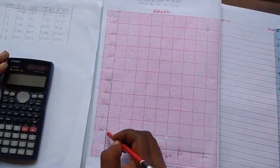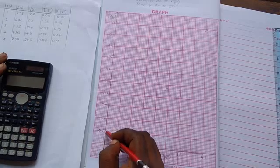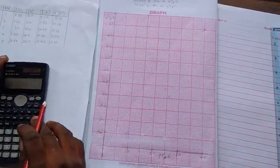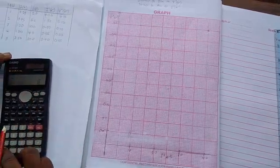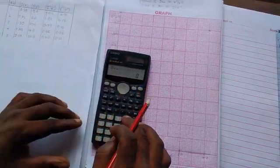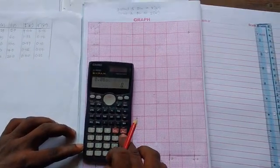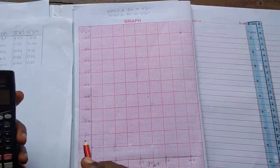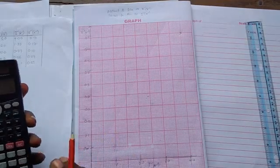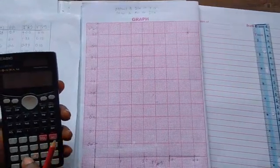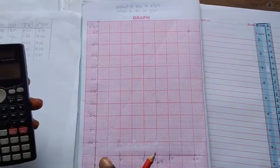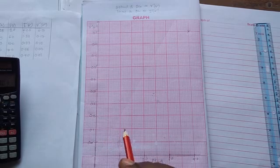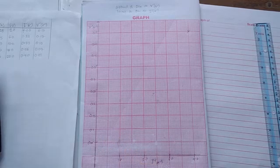This vertical, we said 2 centimeters to represent 0.05. That means there are 10 boxes, 10 boxes to 0.05. So what I will do is 0.05 divided by 10. That gives me 0.005. So if I multiply times 2, for instance, I'll have 0.01. That means each box is 0.01.